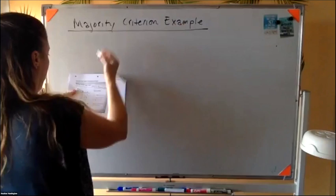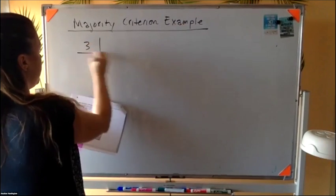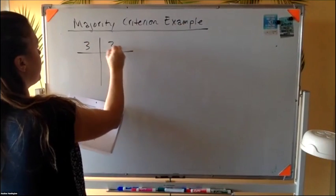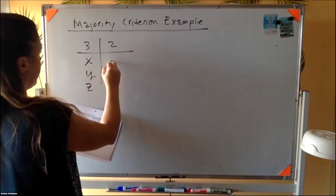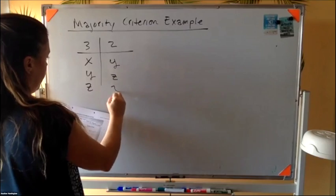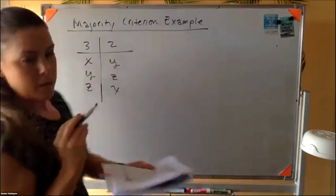In the back of our classwork packet, we have this situation. So the majority criterion, I'm going to put it on the board for us. So we're going to consider this Borda count example. So if we have three people voting in this way, two people voting this way.